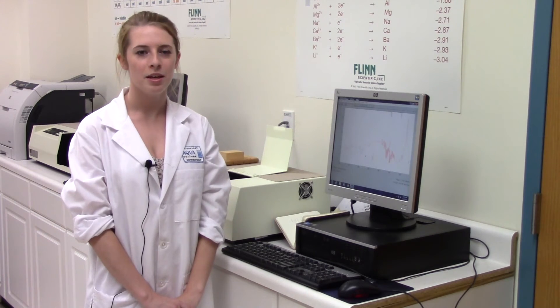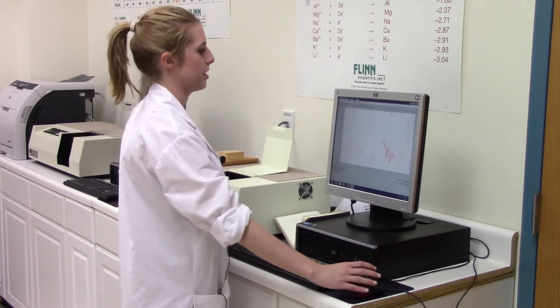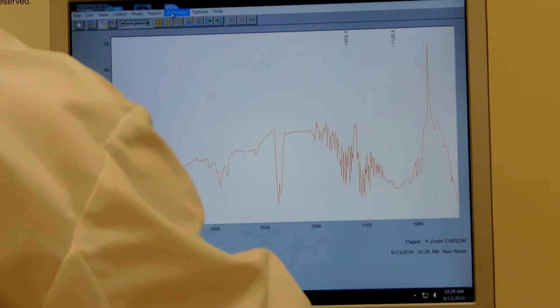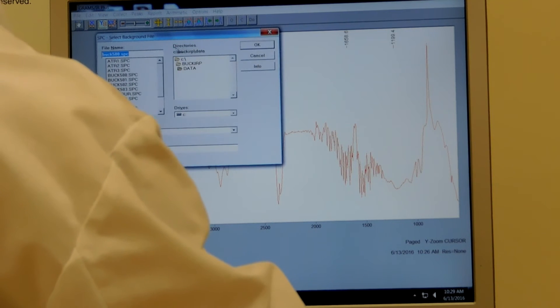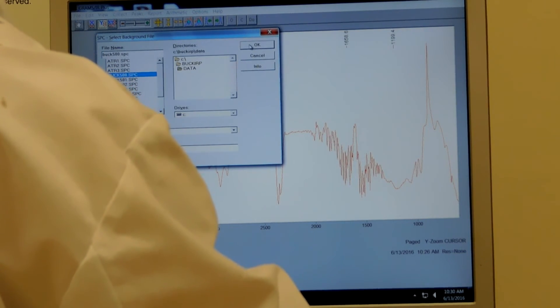After the scan is complete, you can proceed to start processing the scan. First you want to go to arithmetic, transmission, you want to click whatever it was the baseline file, for us it was 500, click OK.